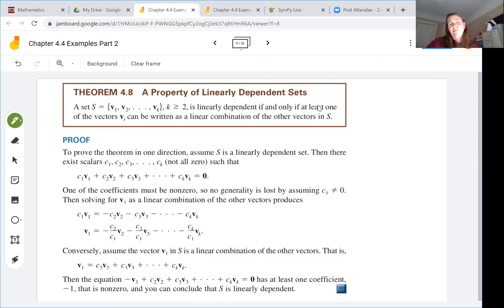So theorem 4.8 is about a property of linearly dependent sets. Set S equals vectors v1 through vk where k is at least two vectors. So this set is going to be linearly dependent if and only if at least one of the vectors vi can be written as a linear combination of the other vectors in S. So this makes sense intuitively based on the examples we've seen. When we have linear dependence you could rewrite the vectors in terms of each other.